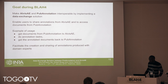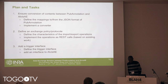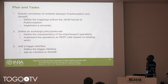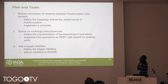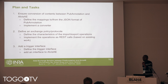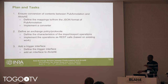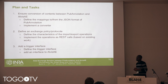The plan involves several tasks. The first task is to ensure the connection of content between Pivot Annotation and Albicide. This means defining the mapping between the JSON format of Pivot Annotation and the format used in Albicide, and then implementing a converter to convert content from Albicide to the Pivot Annotation format.